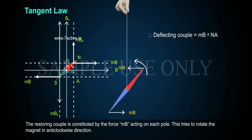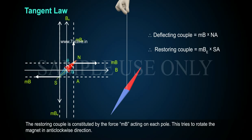The restoring couple is constituted by the force MBE acting on each pole. This tries to rotate the magnet in anti-clockwise direction. Therefore, restoring couple equals MBE into SA.